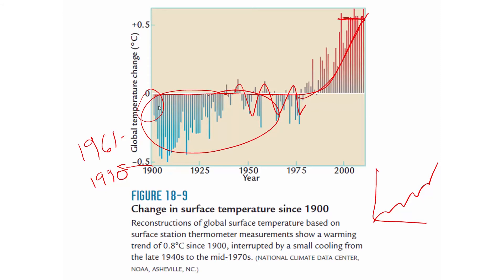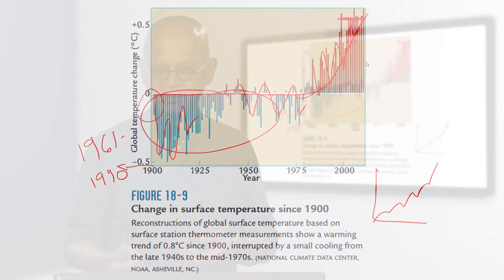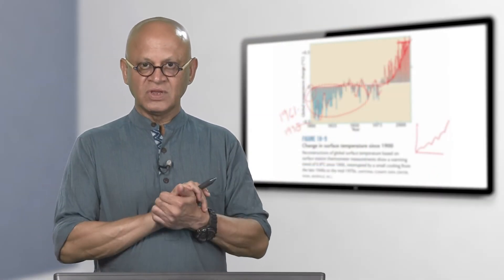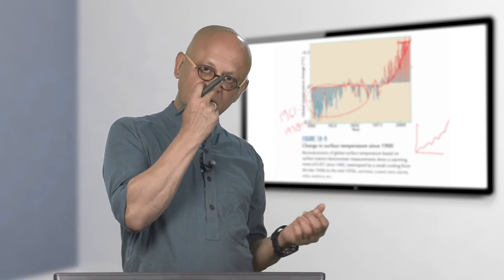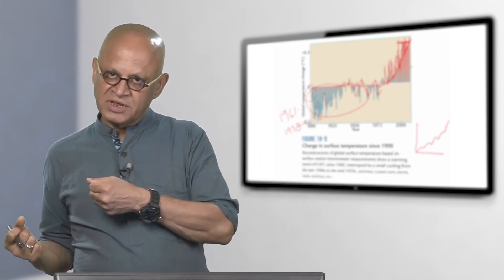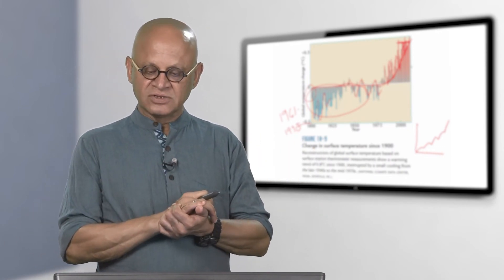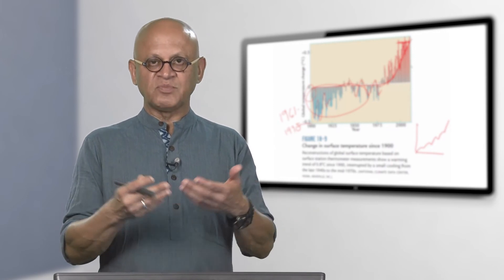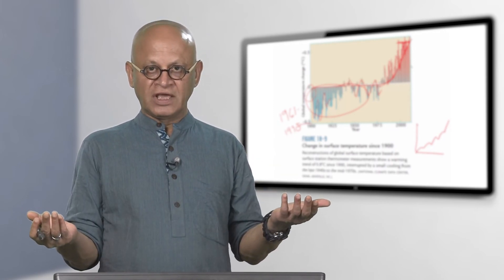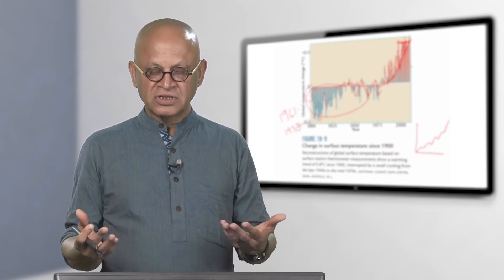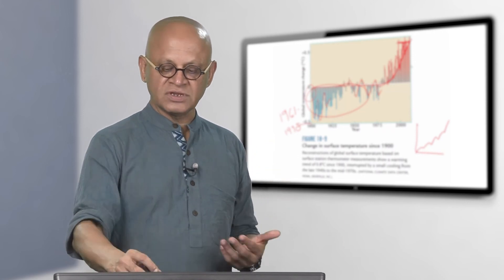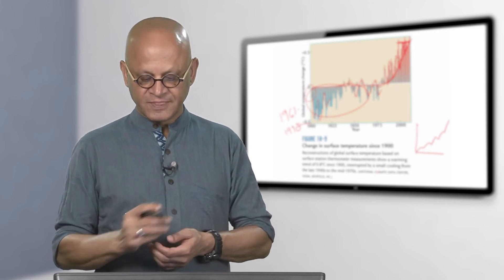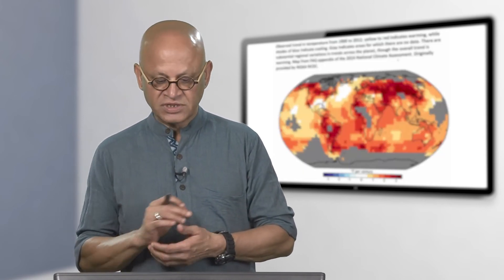Even when it was cold it jumps around, and even when it is warming it jumps around — why? Internal variability: El Niño throws out heat from the ocean, La Niña soaks up heat from the atmosphere. Volcanoes go off and produce a global cooling. These internal variabilities and natural forcings will not go away and produce these ups and downs. That is always something to understand.